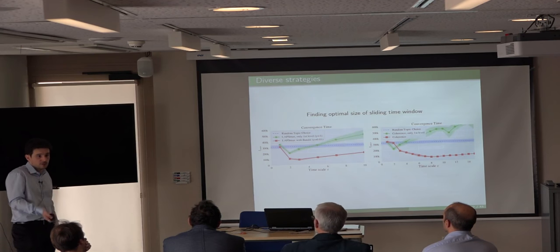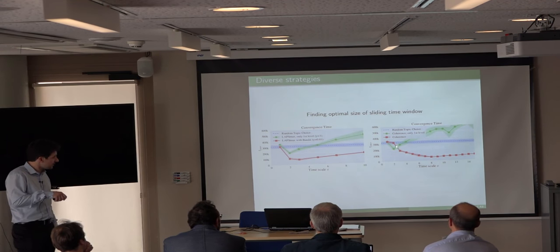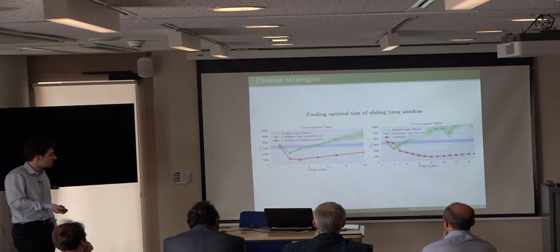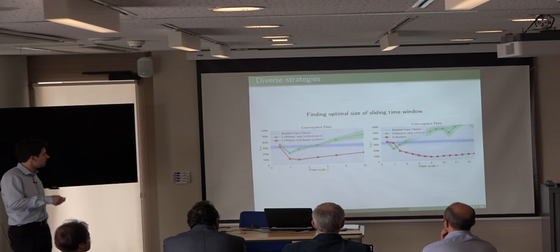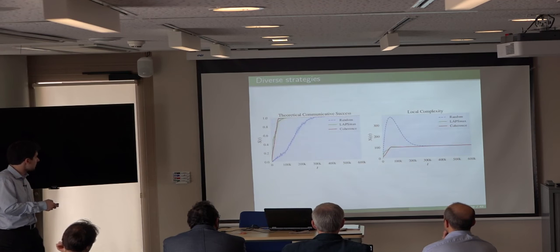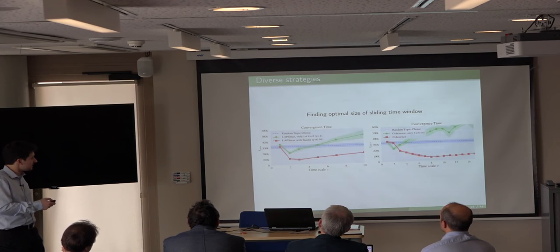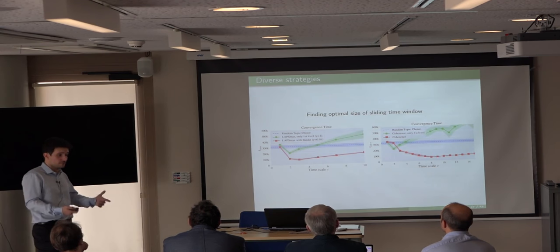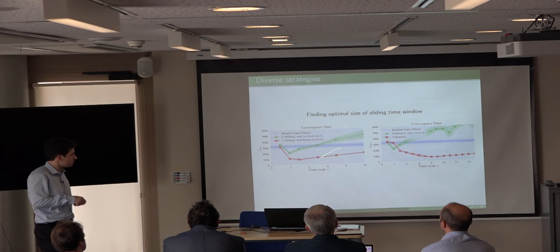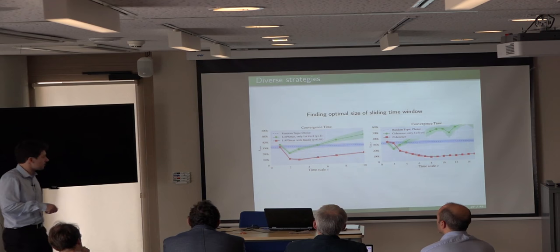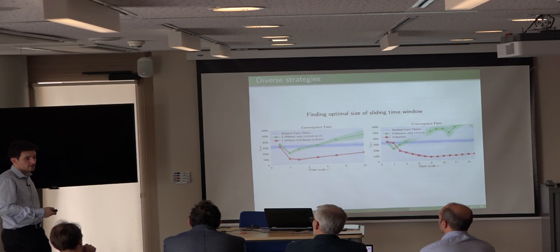We can also define two levels for these strategies, and there's a significant difference between the two. Lapse max has a minimum around two or three — we don't need to gather much information from the past; just two or three interactions per meaning is enough to build a meaningful representation of the population state. For coherence, more information is needed to reach the minimum. However, coherence is actually a bit faster than lapse max, and with a growing population this advantage becomes even more pronounced. So lapse max needs very little memory but is computationally more costly; coherence needs more memory but converges faster.